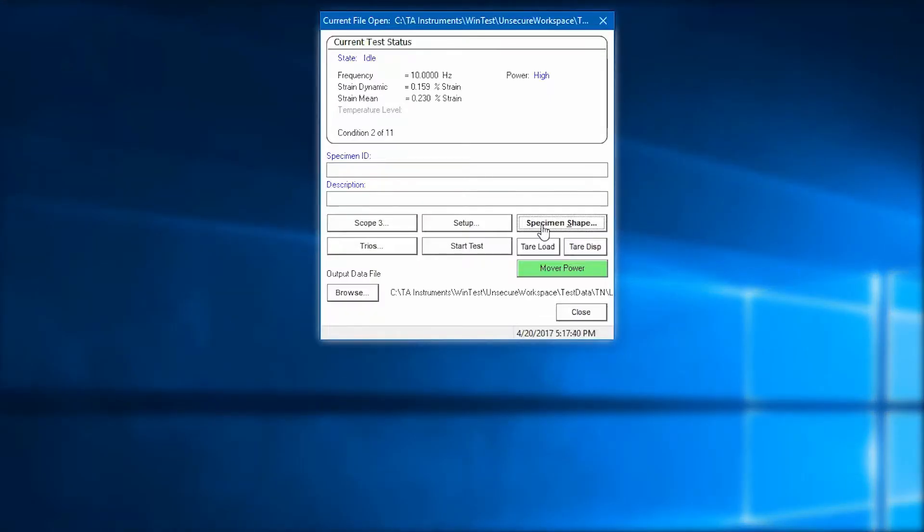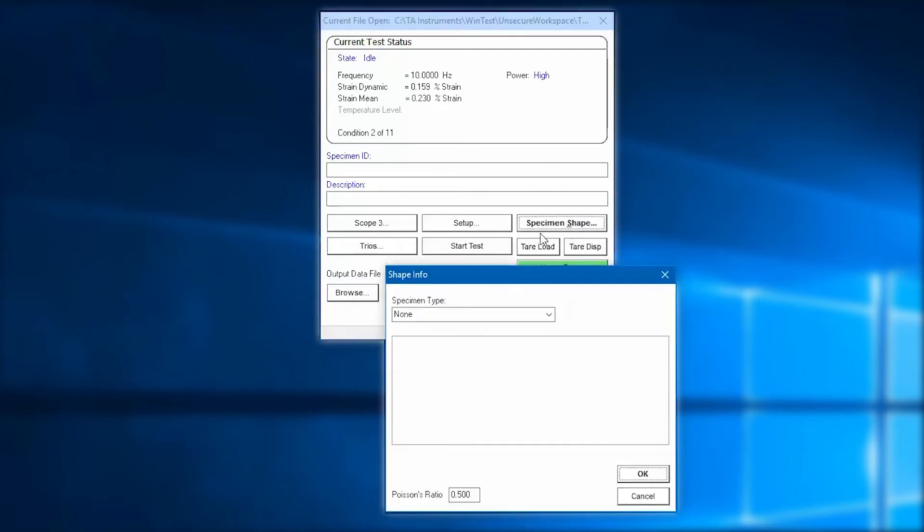In the DMA application, I click the specimen shape button to enter my specimen information. I click specimen type.